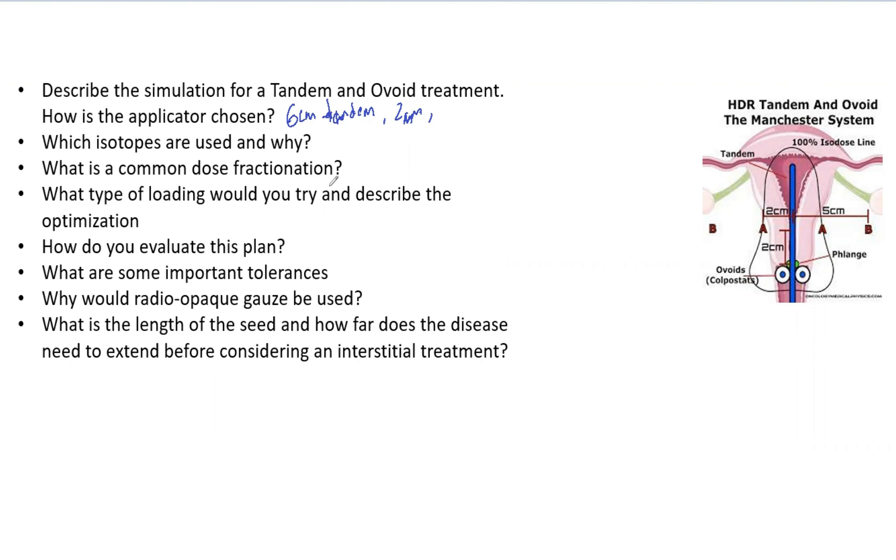What isotopes are used and why? Typically we use Iridium-192 if we're using HDR. The advantages are that it's a 73-day half-life, there is a 380 keV so they're far enough to treat what we want but not so far that it's dangerous for the patient. Most importantly it has high specific activity so we can have a very small source and it still be very strong. The exposure rate constant is 4.26 r per cm squared per millicurie-hour.